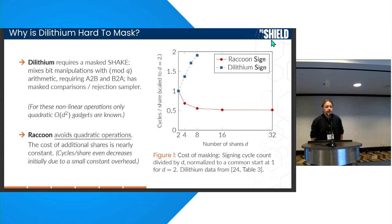What makes masking hard for Dilithium is that there are a bunch of operations within the algorithm that are just hard to mask. It has a symmetric primitive — the Keccak permutation of SHAKE. It does a bit-dropping optimization to shrink the signature and public key, mixing shifts with arithmetic operations — that's quadratic. It converts between arithmetic and Boolean representations — also quadratic. So what we did is create a similar scheme that entirely avoids those quadratic operations. That's the novel contribution: it is quasi-linear, so we can go to very high masking orders and have very good side-channel security, which is basically impossible with the other schemes.